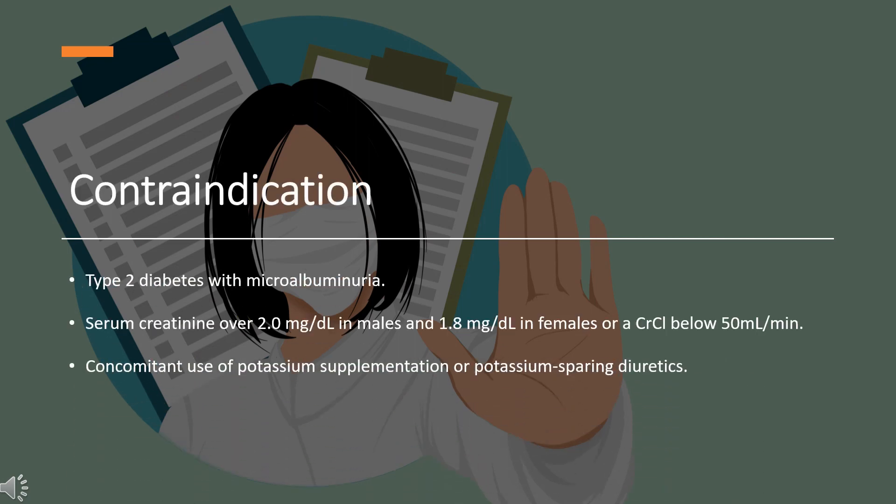Contraindications. Eplerinone is contraindicated for patients known to have type 2 diabetes with microalbuminuria, serum creatinine over 2.0 mg per deciliter in males and 1.8 mg per deciliter in females, or a CrCl below 50 mL per minute, and concomitant use of potassium supplementation or potassium-sparing diuretics.